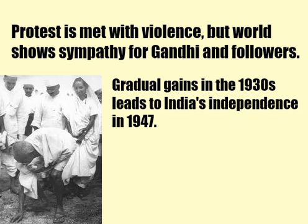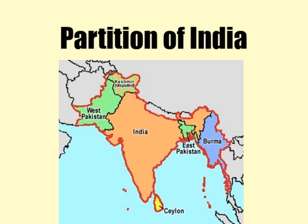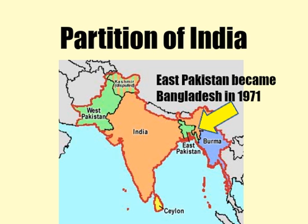However, India's fight for independence from Britain gave way to an internal struggle among religions. When Britain withdrew from India, the country was divided, or partitioned, into the independent nations of India — mostly comprised of Hindus supported by the Indian National Congress — and East and West Pakistan, mostly comprised of Muslims supported by the Muslim League.